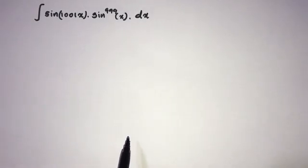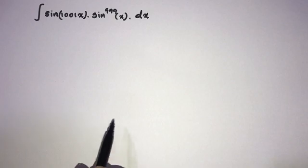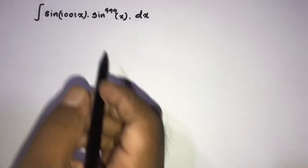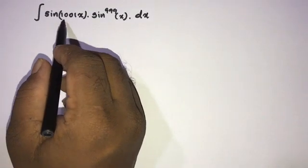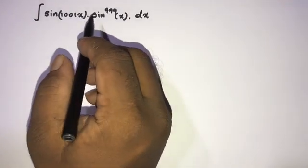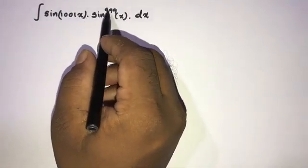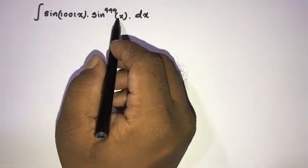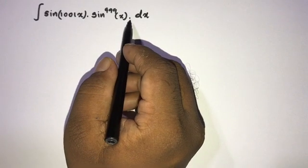Hi, welcome back to the mathematics channel. Today we are going to solve another indefinite integral. The question is the integral of sine of 1001x times sine to the 999th power of x, with respect to x.